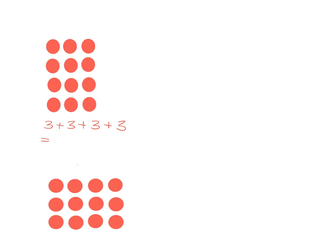But I could also just think of that as saying look I've got one, two, three, four groups, four rows of three. So I've got four lots of three.